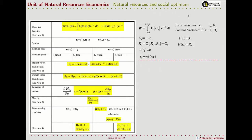What we put on the right is our specific natural resource depletion model. The terminology is a little bit different: in the table they use the symbol x for state variables and u for control variables. For us, the state variables are the stock of natural resources and the stock of capital, while the control variables are consumption and the level of extractions. What you see here in bold are vectors.